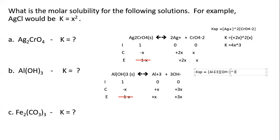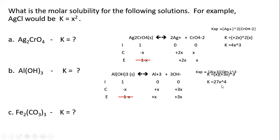The Ksp expression is the concentration of aluminum times the concentration of hydroxide cubed, so Ksp = x × (3x)³ = 27x⁴. If we know the Ksp of aluminum hydroxide we can calculate its molar solubility. Note that the smaller the Ksp, the less soluble the compound is.